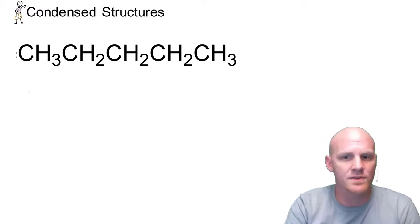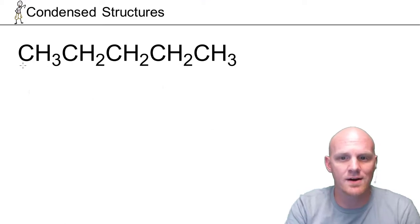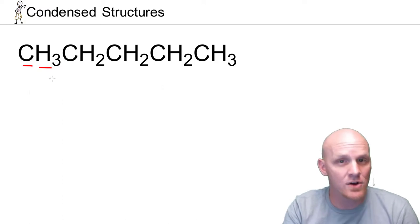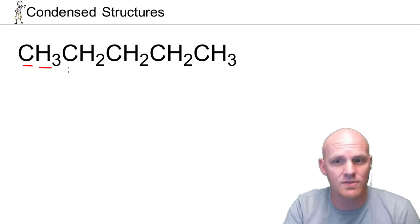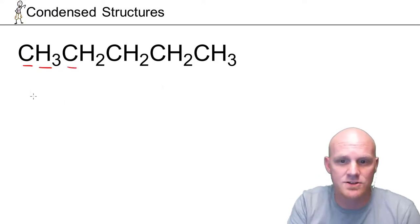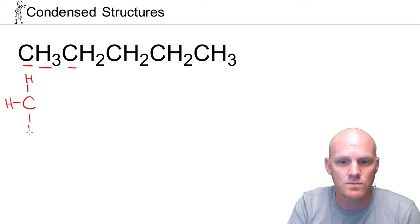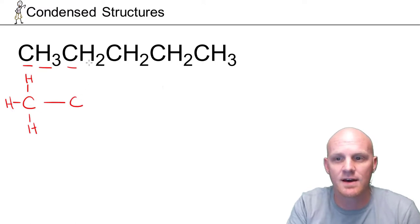The way condensed structures work, we're going to turn this into a Lewis structure. We typically write a carbon atom, then immediately follow with how many hydrogen atoms it's directly bonded to, and then anything else it's bonded to, and then move on to the next carbon in the chain. So in this case, we've got a carbon bonded to three hydrogens, and then it's bonded to the next carbon in the chain, which is bonded to two hydrogens.